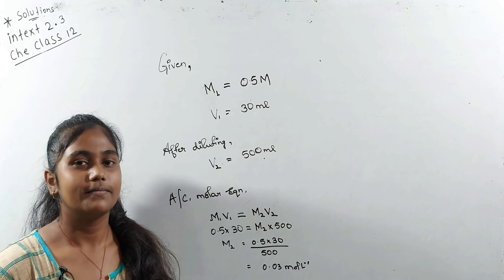So M₂ equals 0.03 mol per liter, which is our molarity unit — that's our answer. If you liked it, please like and subscribe too. Thank you!